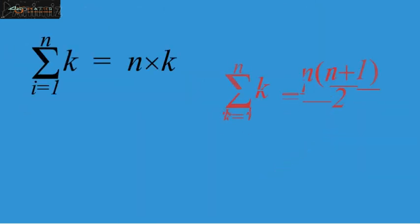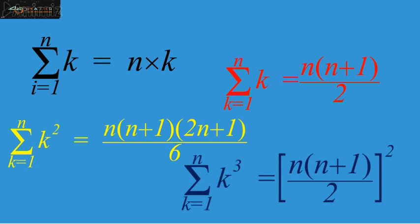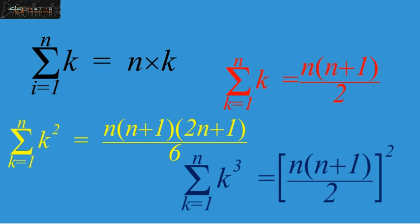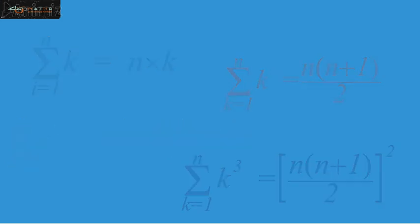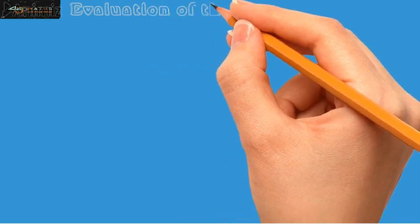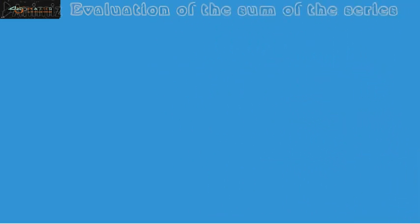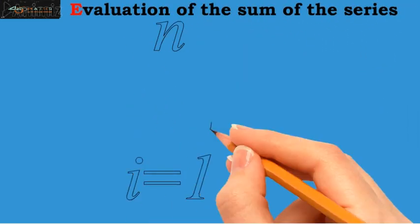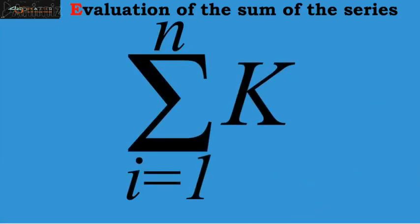As the aim of this video is to find the formulas for the sum of the series, the first one is to evaluate the sum of the series summation i equals 1 up to n, k. Here, we see that this series does not involve the variable term, that is i, and only contains some constant k.